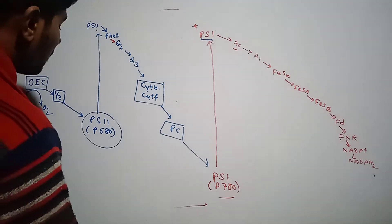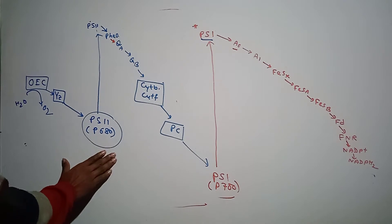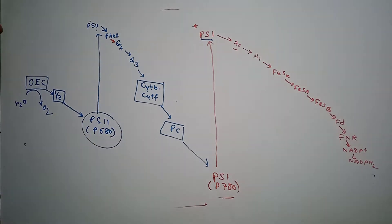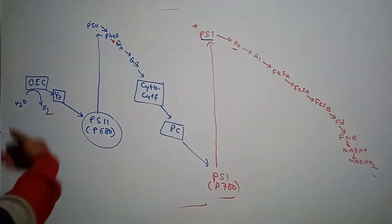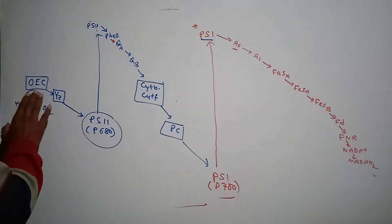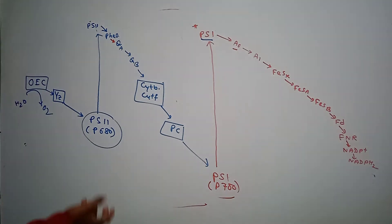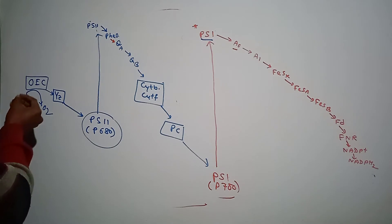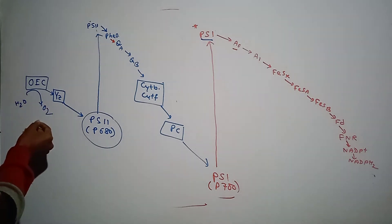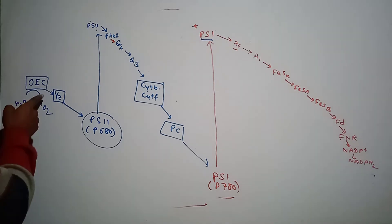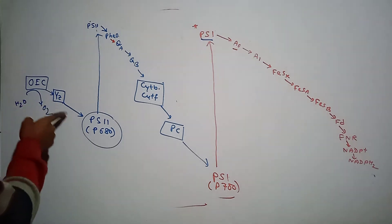Now when it has released this electron, Photosystem 2 is electron deficient again. To compensate for the loss of this electron, the OEC (oxygen evolving complex) releases electrons that were derived by the photolysis of water, forming oxygen. The electron is transported to PS2 by a tyrosine residue.